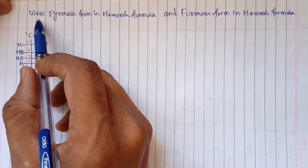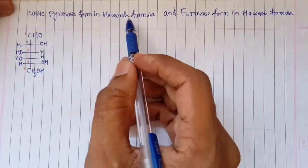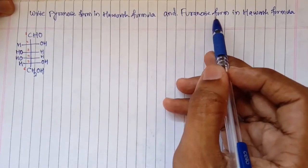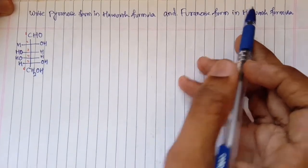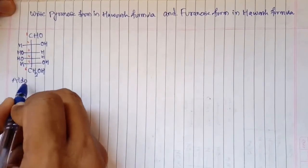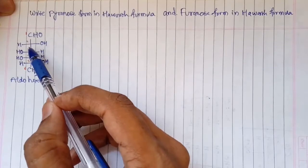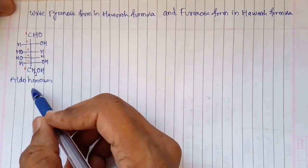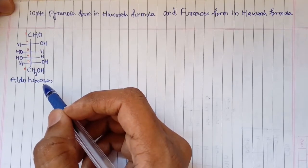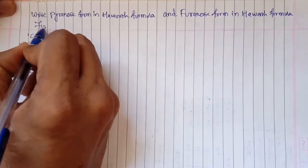Hello friends, today I am going to explain how to write the pyranose form for a given structure using the Haworth formula. Later we are also going to look into how to write the furanose form in the Haworth formula. I have taken one example here — this particular structure is an aldehyde. It has six carbons numbered one through six, so it's an aldo hexose. I am going to show how to write the pyranose form for this structure, which is given in the Fischer formula.